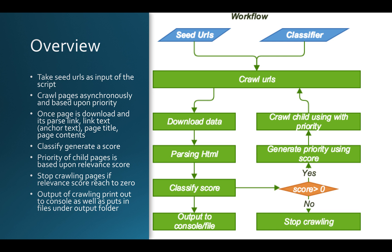Once the HTML content is parsed, we pass information like page title, page description, and anchor text to the classifier, which generates a score between zero and one. We also output the link and score to the console. If the score is zero or less, we stop crawling that page. If the score is greater than zero, we generate a priority using that score and assign it to all links from that page, so we crawl the most relevant pages first. This cycle keeps repeating.